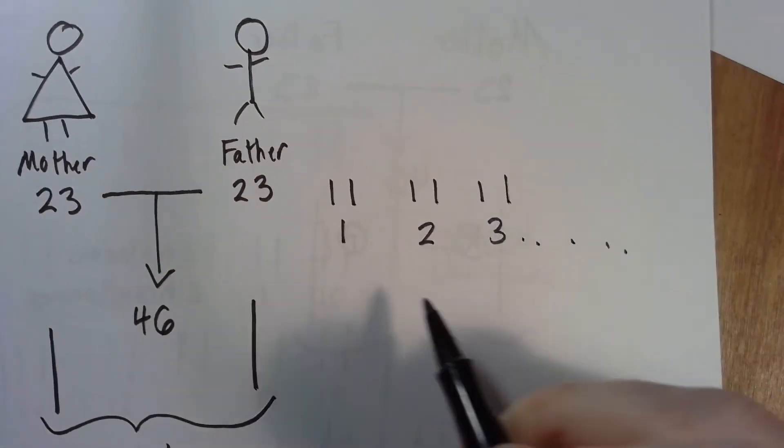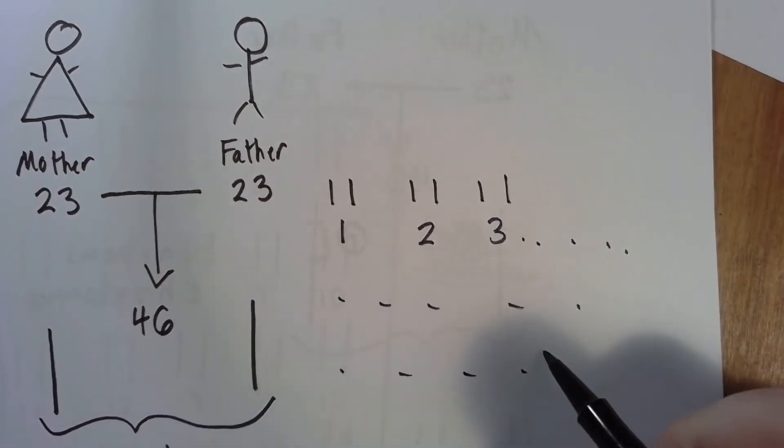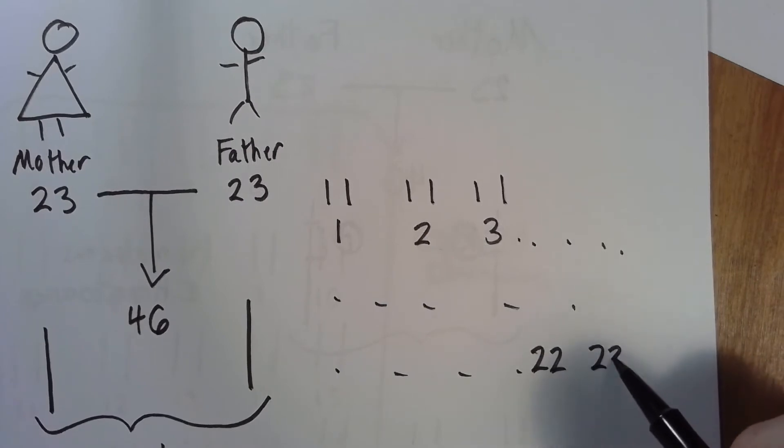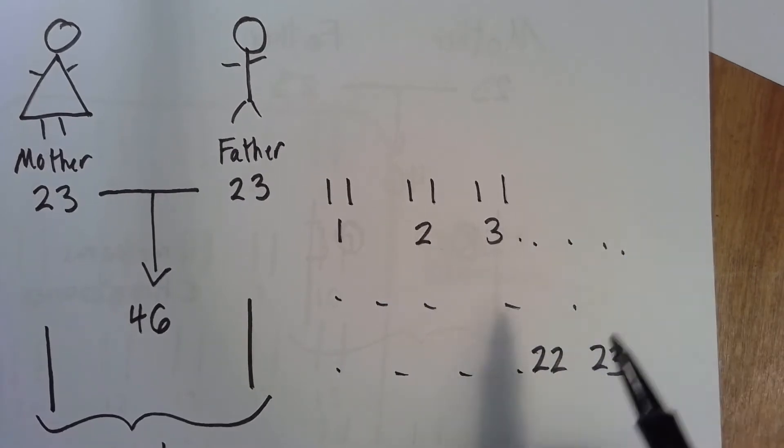It would go all the way 22, 23. Every cell in your body has this, 46 chromosomes.